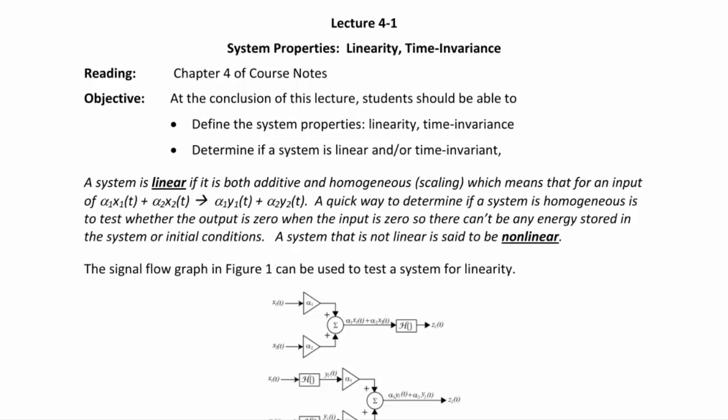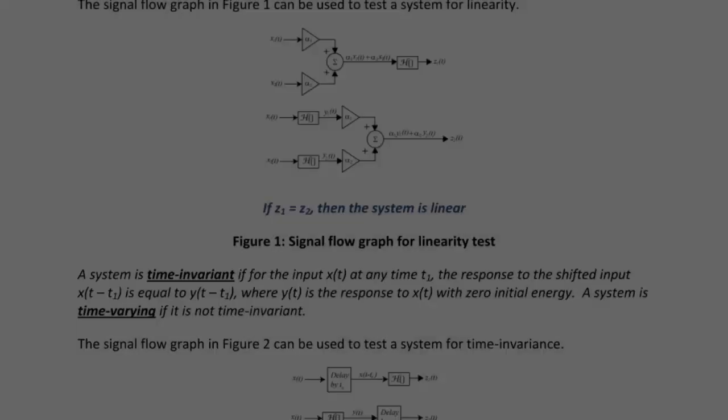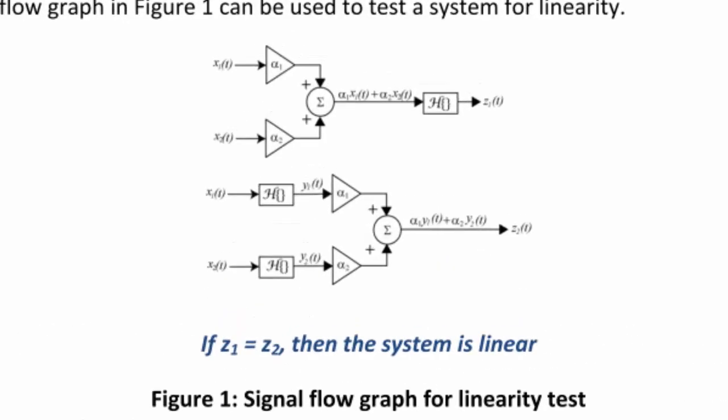A system that is not linear is said to be non-linear. The following signal flow graph can be used to test if a system is linear. First, given the input x1(t), you multiply it by alpha_1, and given the input x2(t), you multiply it by alpha_2. Then you send it through the function for the output signal and find z1(t).